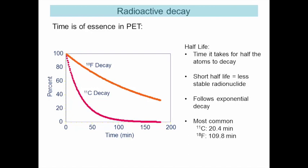Half-life means the time it takes for half the atoms to decay. If you have a short half-life, you have a less stable nucleotide, and that determines how quickly you need to react in your scan. For example, if your PET scan is lined up and your subject is 20 minutes late, you might lose half your radioactivity before injecting. So in PET, timing is really essential and must be coordinated with the radiotracer production.